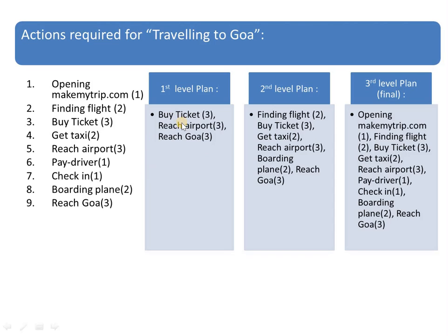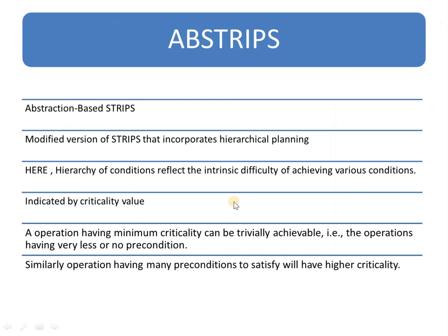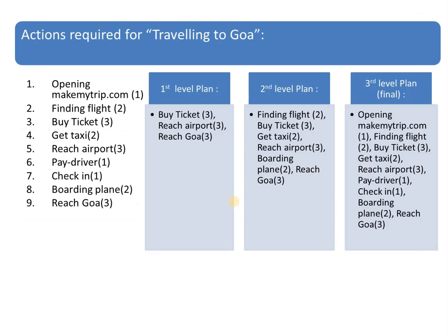So this is the abstract level, and besides this abstract level there are many activities. Buy a ticket is the most relevant activity. Before buying the ticket I am opening the ticket booking website, I am checking the flight in which I have to travel, and I am buying the ticket — so these three activities come up in the back end of the 'buy a ticket' action. Similarly, for 'reach airport' I am going to get a taxi. This gives a clear idea. I will arrange this using ABSTRIPS — Abstraction-Based STRIPS — which is a modified version of STRIPS. It assigns minimum and maximum criticality values and converts actions into different levels.